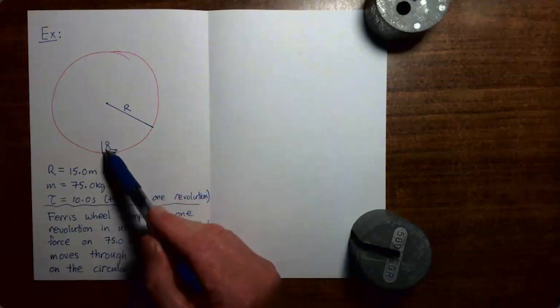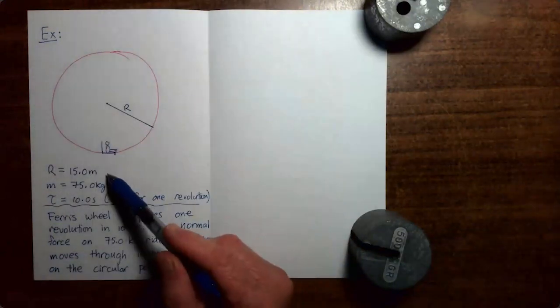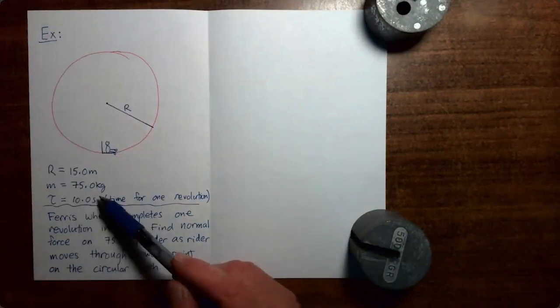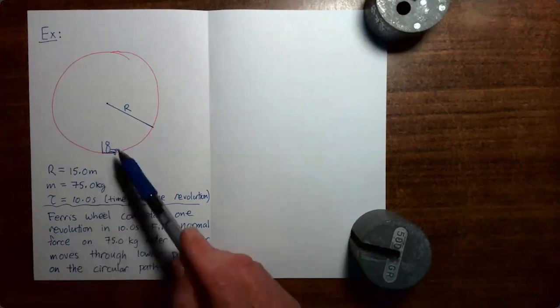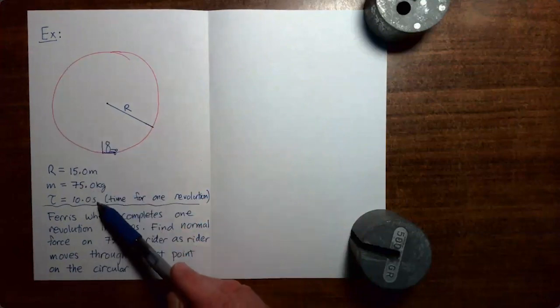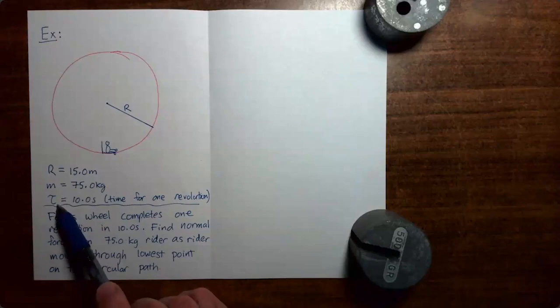So in this problem, I have this rider who's going round and round the Ferris wheel. The radius of the motion that the rider makes is 15 meters. The mass of the rider is 75 kilograms. The time it takes the rider to make one complete circle is 10 seconds. I'm denoting that time using the Greek letter tau.